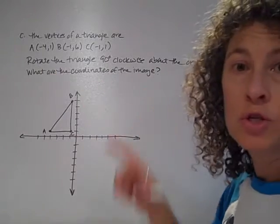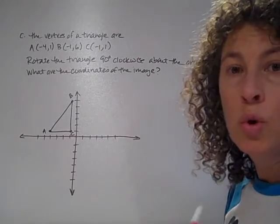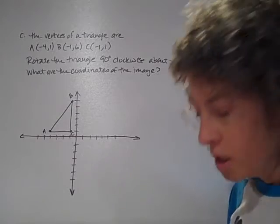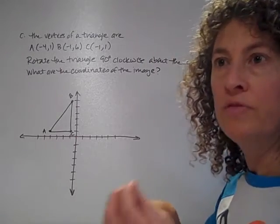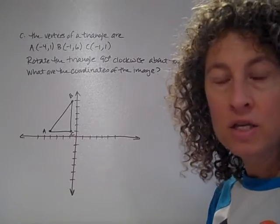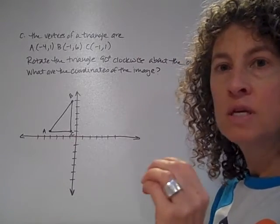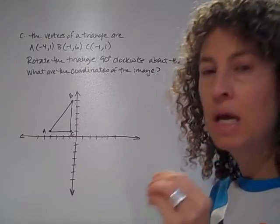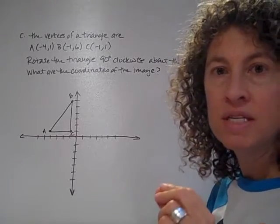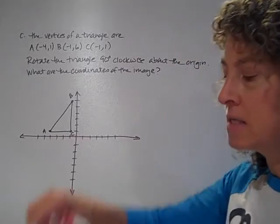So what are the coordinates of the image? So we're looking for the coordinates of that new figure when we're done with it. So we're going to be working in class with what we call patty paper. If you've ever gotten a whole bunch of hamburger patties for a barbecue, there's a little piece of, a square piece of thin paper in between the hamburger patties. It's called patty paper, P-A-T-T-Y. We've been working with that in class.